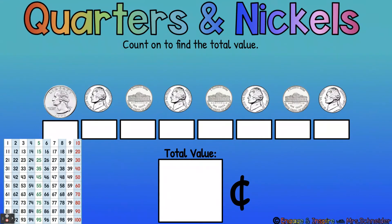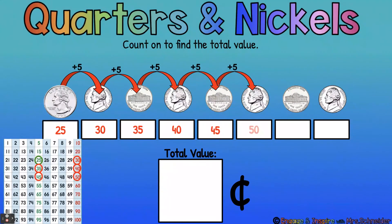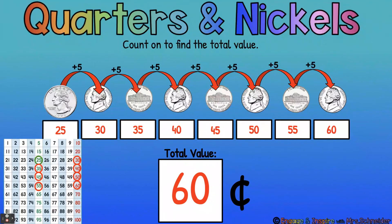Let's count on. We have one quarter and the rest are nickels, so we count our quarter and then count by fives. So 25 — now counting by fives, you know it's going to zigzag back and forth. 25, 30, 35, 40, 45, 50, 55, 60. So the total value of our coins is 60 cents.